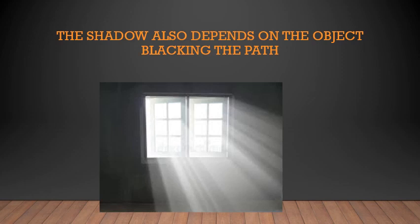The size of a shadow depends on how bright the light is, in which direction the light is falling on the object, and the size of the object. These are the three factors which affect the formation of the shadow. The shadow also depends on the object blocking the path of the light.